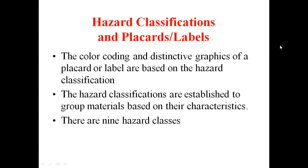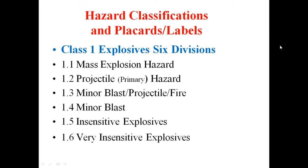The first hazard classification is Class 1: Explosives. Class 1 has six divisions, including mass explosive hazard, tile hazard, primary hazard, minor blast, fire, chemical explosive, minor blast, sensitive explosive, very insensitive explosive, and explosive materials.